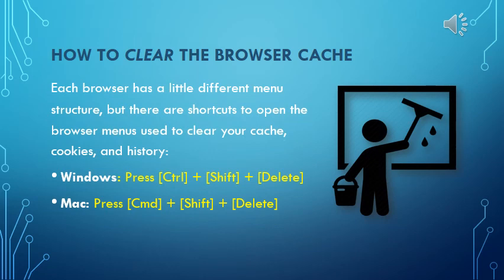If you actually want to go ahead and clear out the browser cache so you don't have to bypass it, each browser has a way on their menu in the settings to do it, but each browser has a slightly different menu structure. There are shortcuts to open the browser menus used to clear your cache, cookies, and history that work on almost all browsers. If you're on a Windows machine, press Ctrl plus Shift plus Delete. If you're on a Mac, press Command plus Shift plus Delete, and the settings menu should come up.